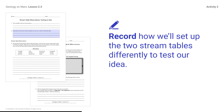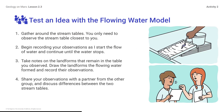Record how we will set up the two stream tables differently to test your idea. You should record or remember the information about the setup. If you do not have access to the stream tables at home, predict what you think will happen. Or if you can set up something similar at home, like a garden hose and dirt or other method, you can test your idea.